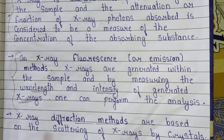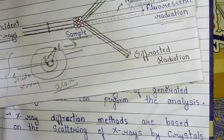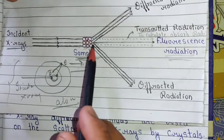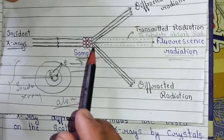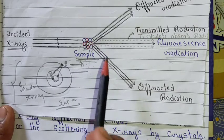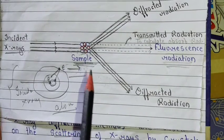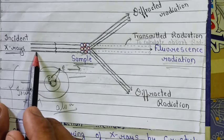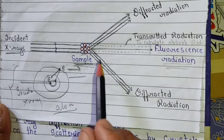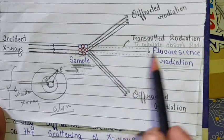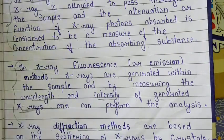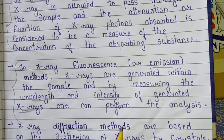The third is the X-ray diffraction method, which is based on the scattering of X-rays by crystals. When incident X-rays strike the sample, it all depends on the atoms present in the particular sample. When we use the crystalline form of the sample, the radiation gets diffracted — that is, when incident radiations attack the crystal form of the sample, they diffract at different angles, and that radiation is known as diffracted radiation. Using all these methods, we can determine the molecular structure.